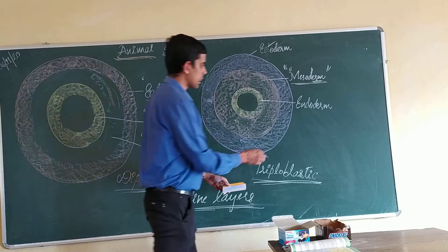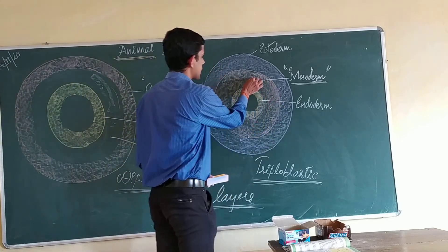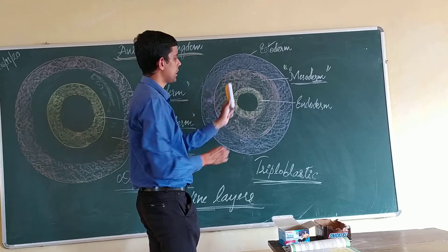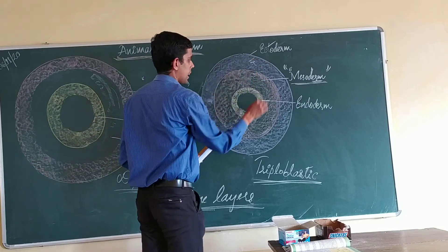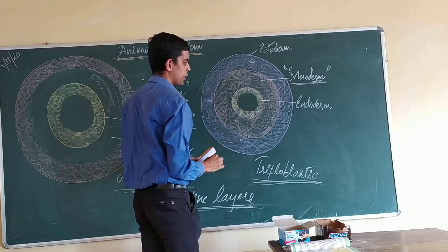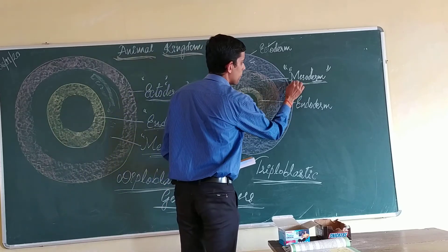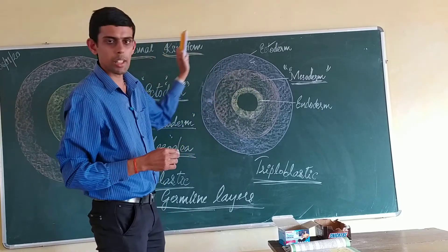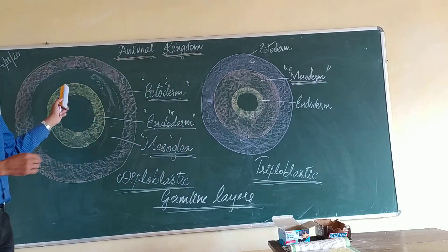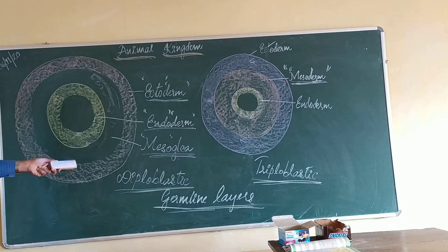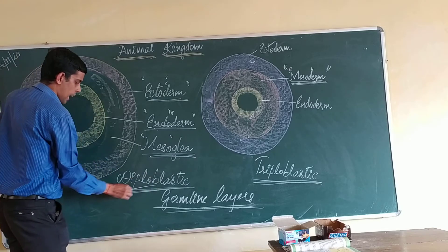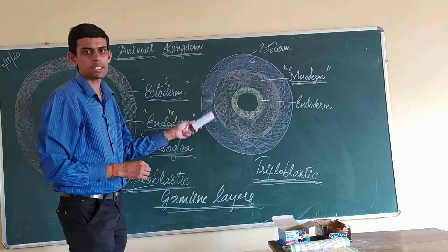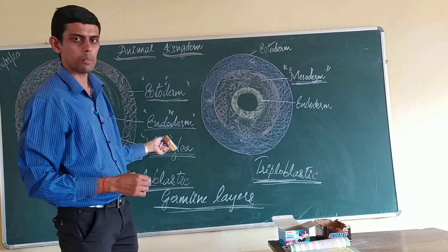In triploblastic animals we find a distinct differentiated middle layer — the outer ectoderm, the inner endoderm, and a differentiated middle layer called mesoderm. So there are two types of animals based on germ layers: diploblastic animals and triploblastic animals.